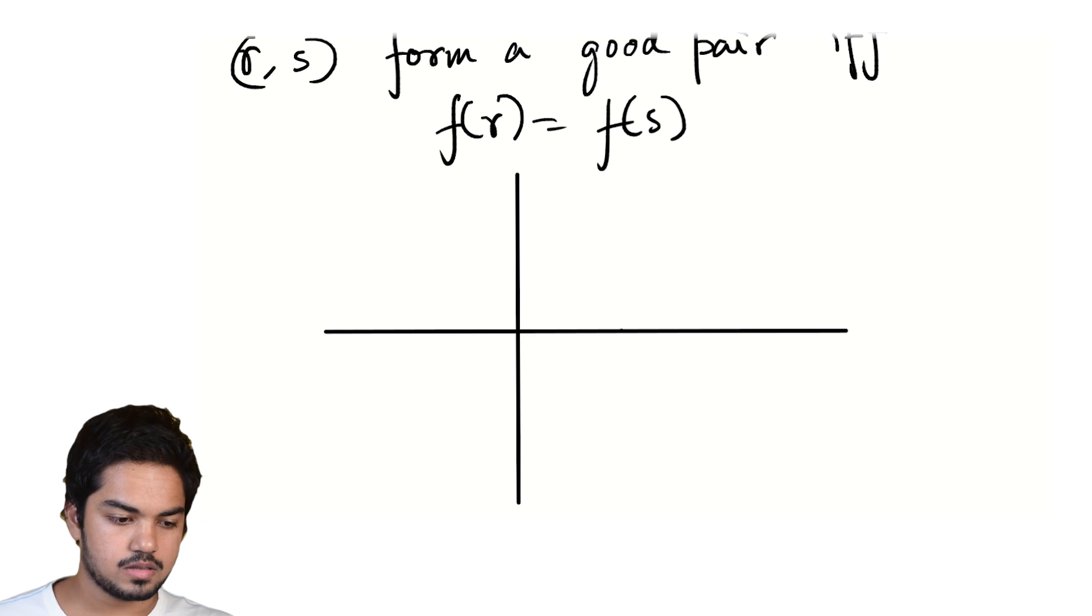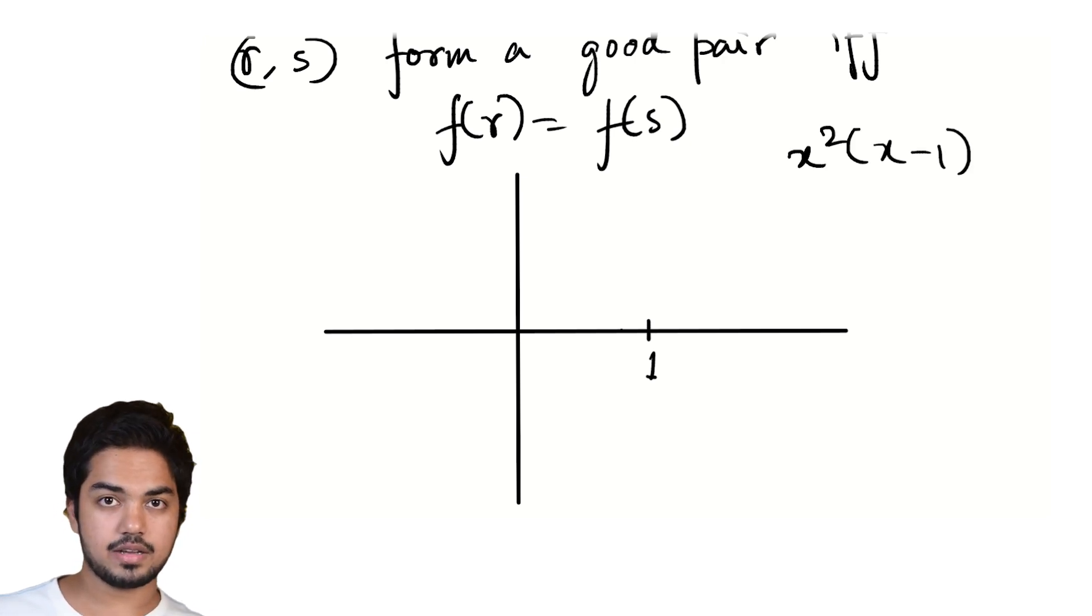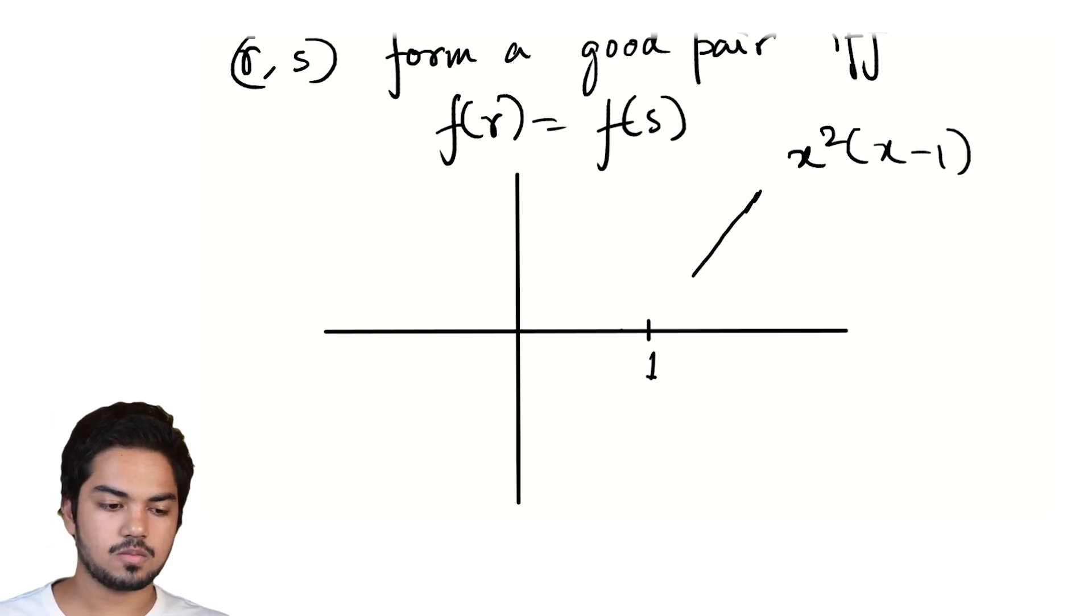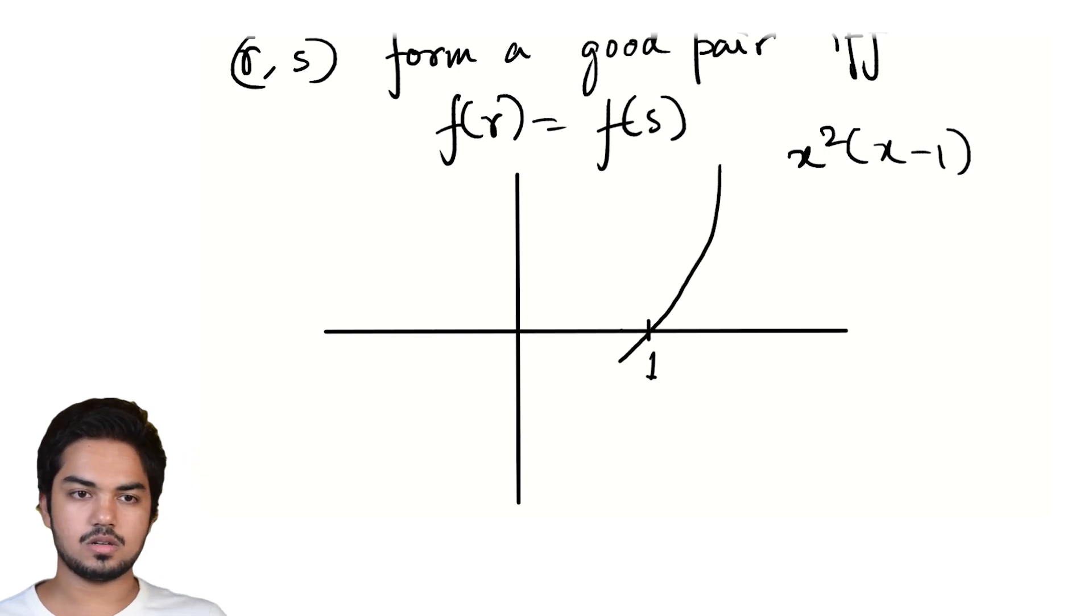And so let's draw this out. So there's a single root at one. And so this could be a sort of a quick way of how to draw graphs of polynomials. If I have x² into (x - 1), I know that if I take very large values of x, I'll start with large positive values.